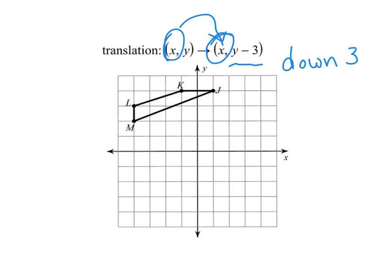All right. So again, if we look at M, 1, 2, 3. There's our M prime. Go to J, 1, 2, 3. There's J prime. L, 1, 2, 3.